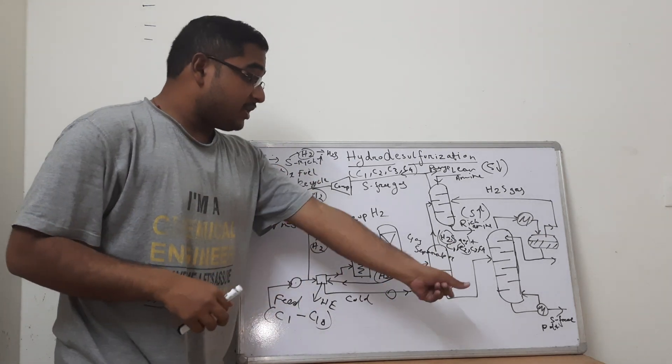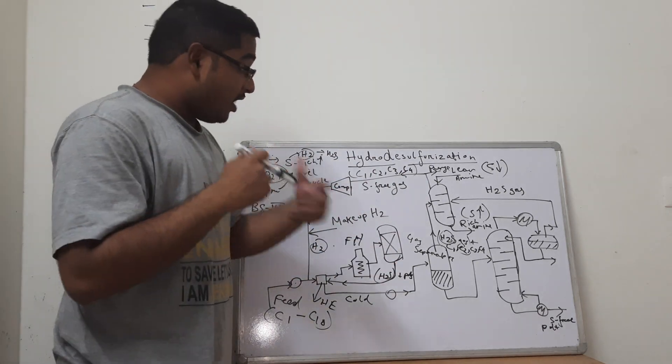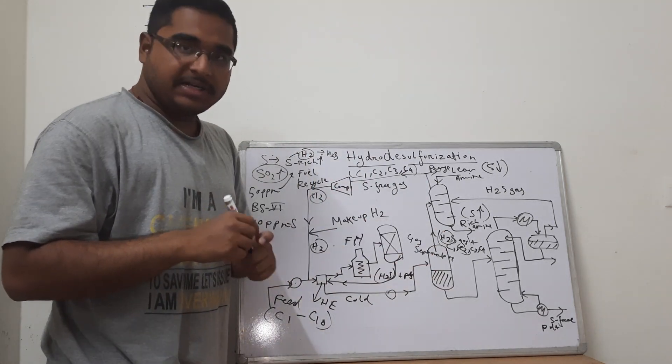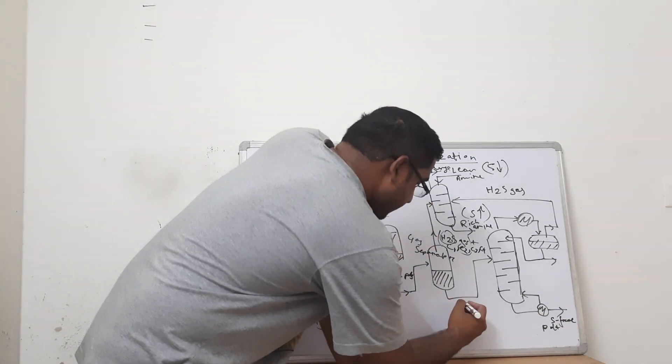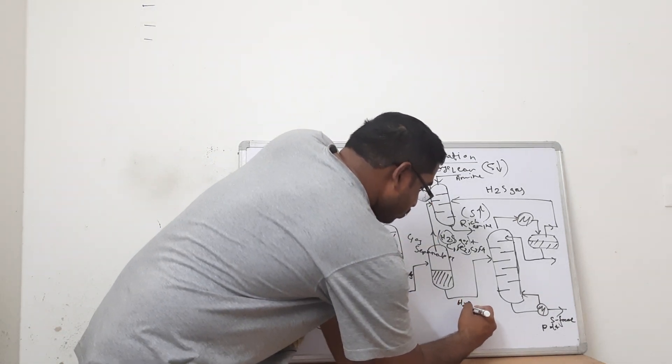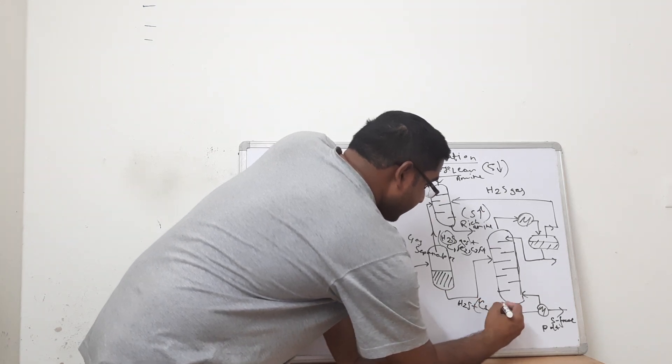Now you see from the gas separator, the liquid that remains might contain some amount of dissolved H2S. It is not 100% separated in the gas separator itself only by flushing or throttling.